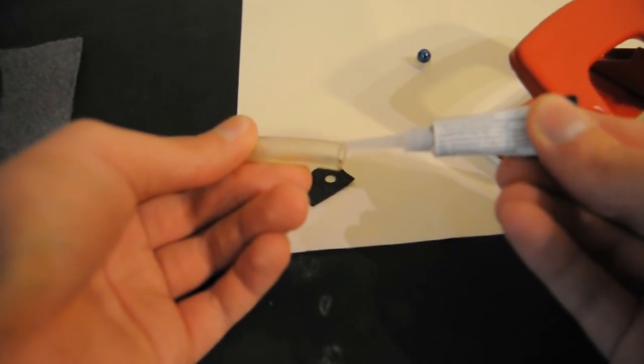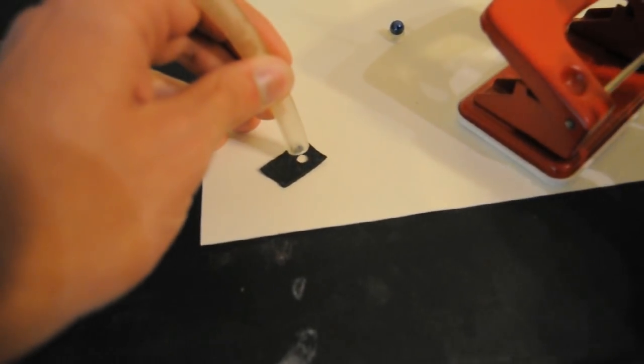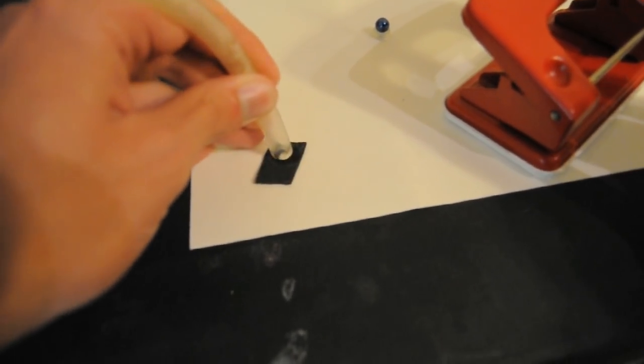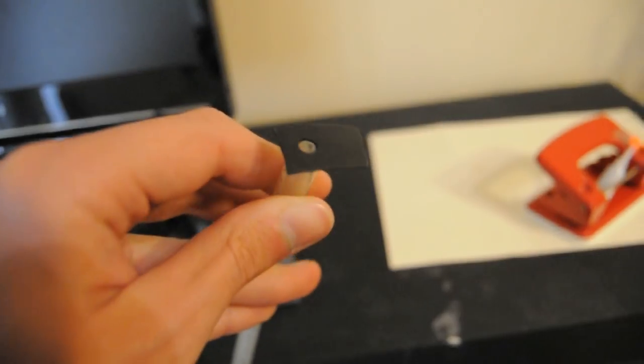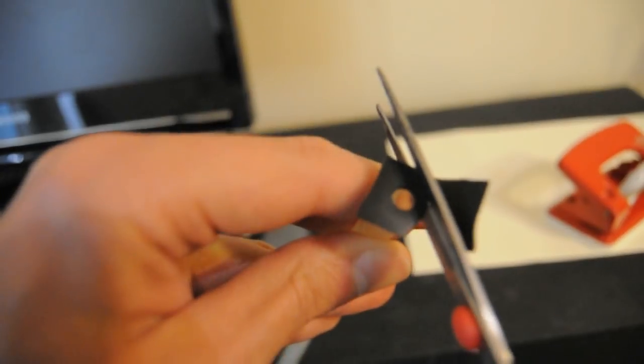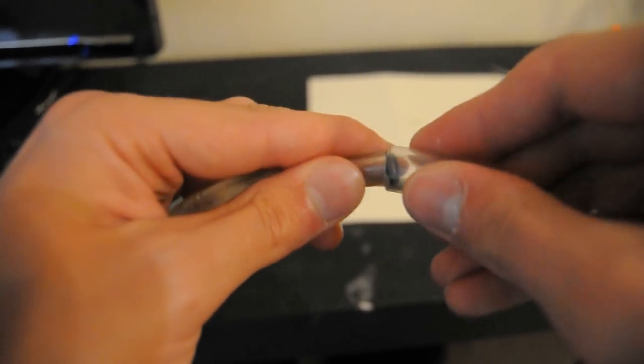Apply super glue to the end of the tube and glue it to the rubber. Now cut anything that sticks out and slide it into a 1 inch piece of the larger tube and glue it with super glue.